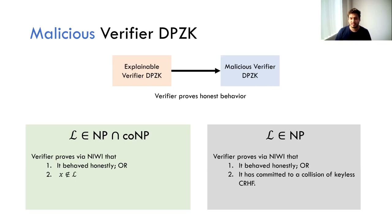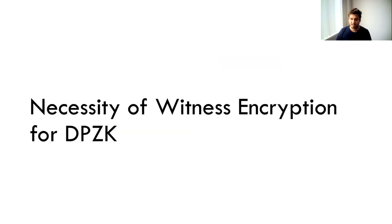So we have now gone from honest verifier DPZK all the way to malicious verifier DPZK, admittedly under strong assumptions. This gives us a perfect jumping point to the next part, where we talk about the necessity of these strong assumptions — specifically, we show that if a language has a DPZK, it also has a witness encryption scheme.